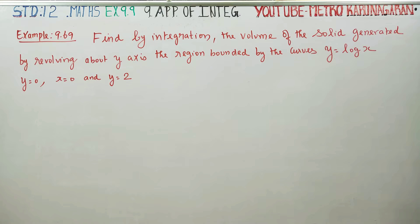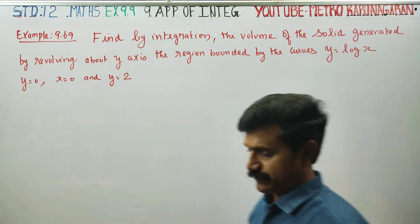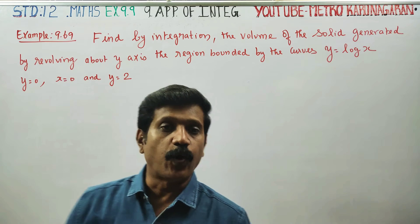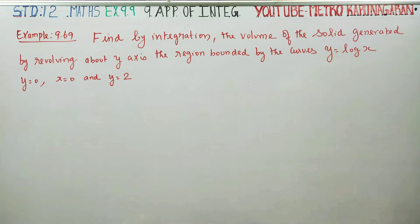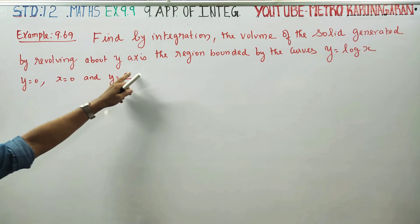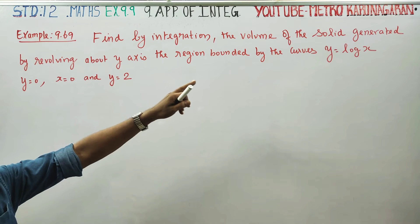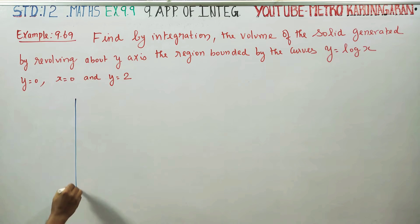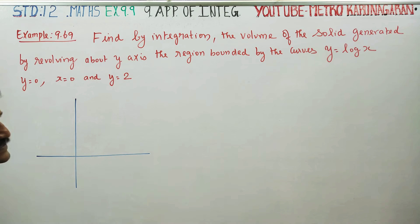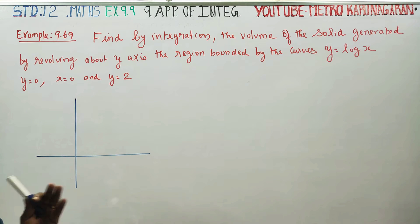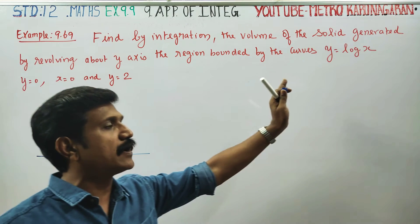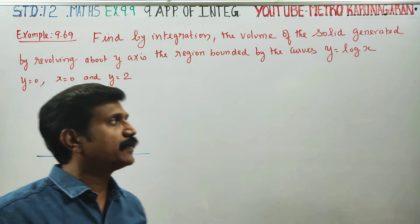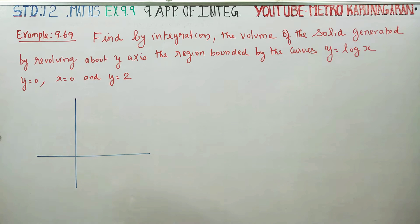In example 9.69, find by integration the volume of the solid generated by revolving about the y-axis the region bounded by the curve y is equal to log x. First, y is equal to log x — you can see that curve.